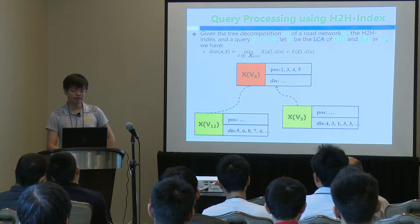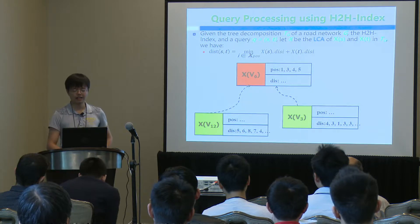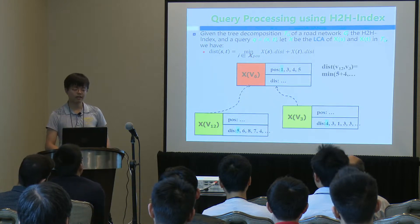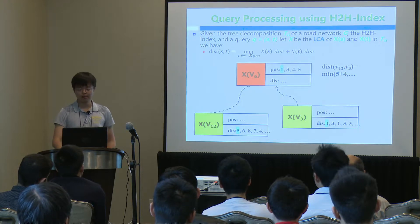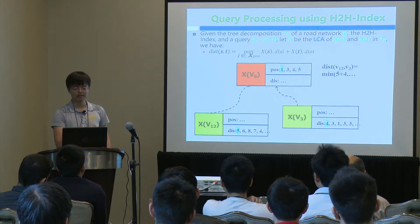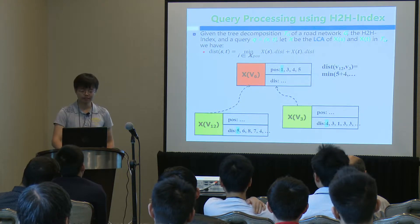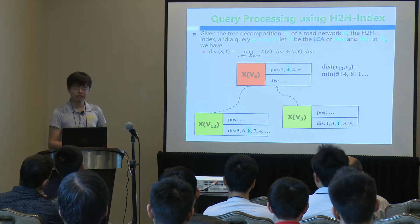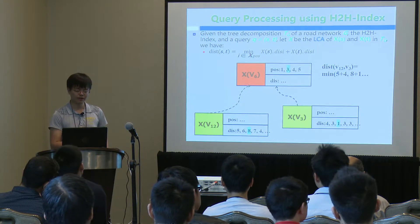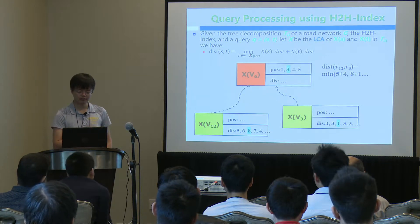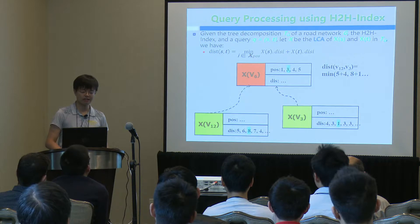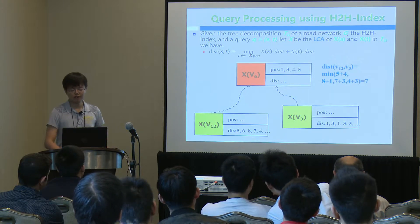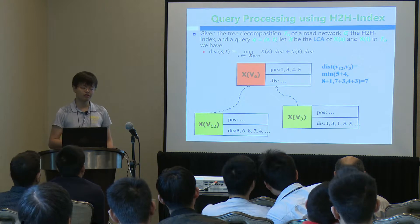For a query example with V12 and V3, we calculate LCA V6 and perform query processing as follows. First, we select the first value in the position array, which is 1, and locate and add the corresponding distance values to get a candidate result. Then we choose the second position value, which is 3, access the third distance values, and add them. We repeat for the remaining position values. The minimal sum is 7, which is the shortest distance.